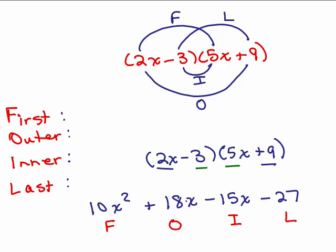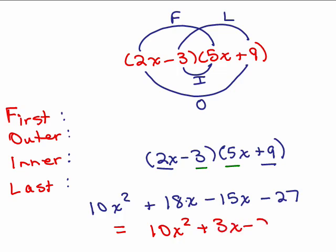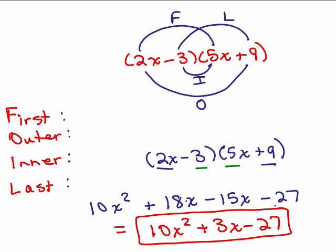That's where the word FOIL comes from — you look at the first two terms and multiply, the outer two terms and multiply, the inner two terms and multiply, and the last term in each parenthesis. I still have to add my like terms together to finish the problem. The outer and inner terms are the like terms — 18x minus 15x gives 3x — so I get 10x squared plus 3x minus 27, the same answer as the box method and vertical format.